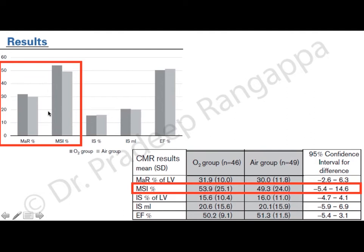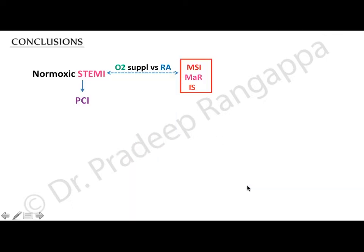In comparison to the Australian AVOID study — which showed that oxygen increased infarct size and myocardial injury — the SOCCER trial was a non-inferiority study showing no deleterious effect but also no benefit. This highlights the question of safety of withholding routine supplemental oxygen in patients with ST-elevation MI, basically emphasizing that you don't routinely have to give oxygen to normoxic MI patients.